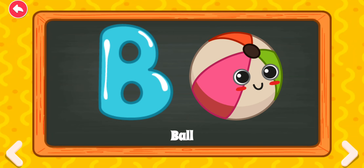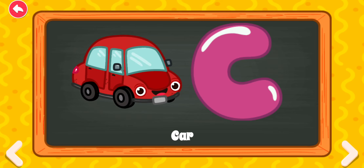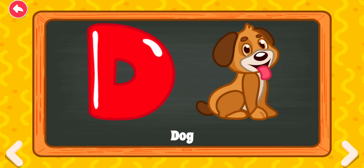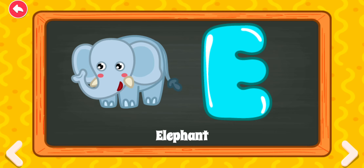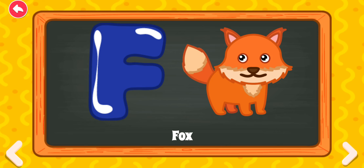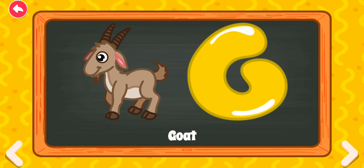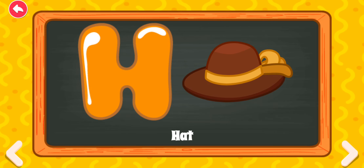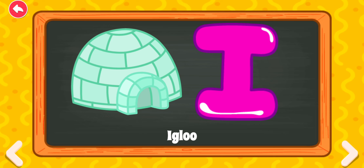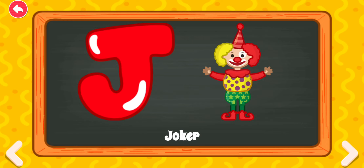B for ball. C for car. D for dog. E for elephant. F for fox. G for goat. H for hat. I for igloo. J for joker.